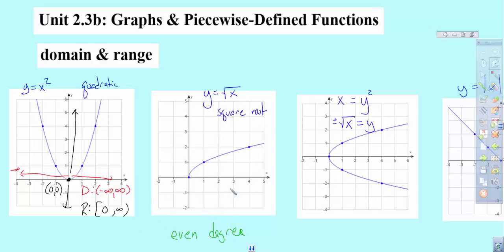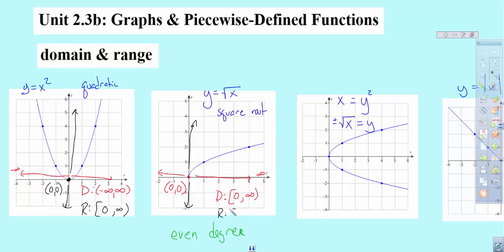Looking at the square root function's domain: I stand at the origin and look to the left — I don't see anything. I look to the right — it goes on forever, so definitely to positive infinity. But where do I start? That ordered pair is 0, 0, so my domain starts at 0 and goes to positive infinity. For the range: I look down and see nothing, then look up — even though it's really going out, it's also coming up. So my range starts at 0 and goes to infinity.